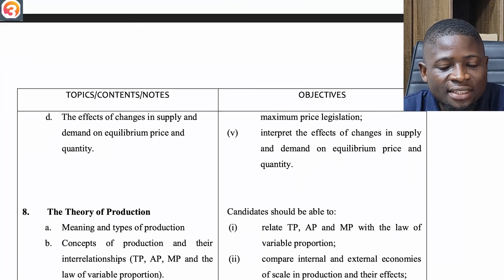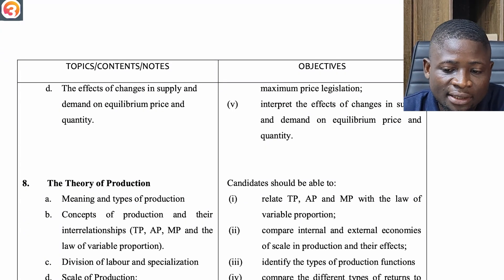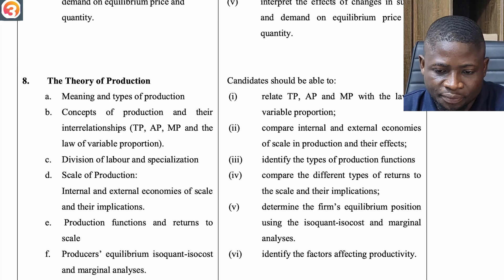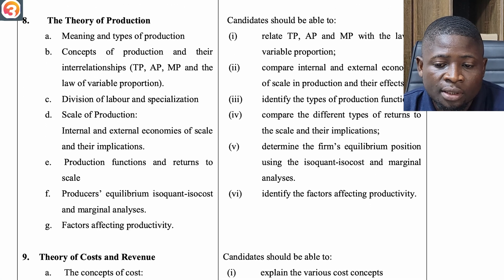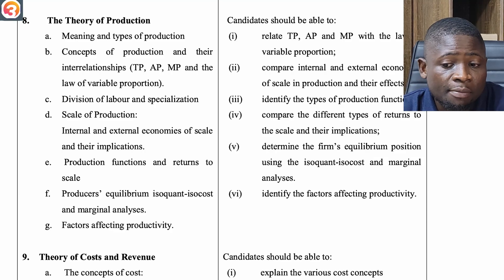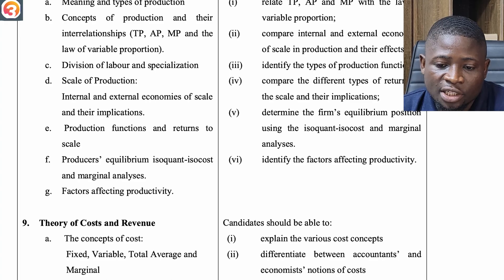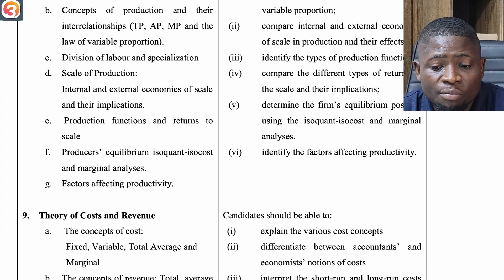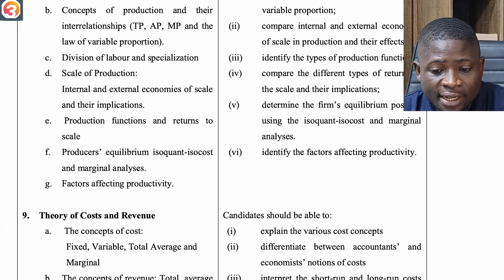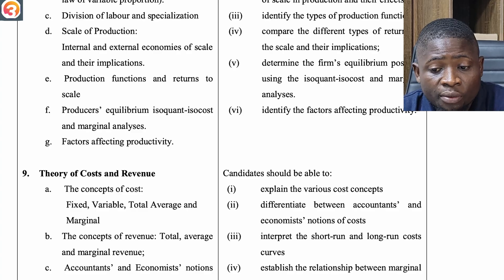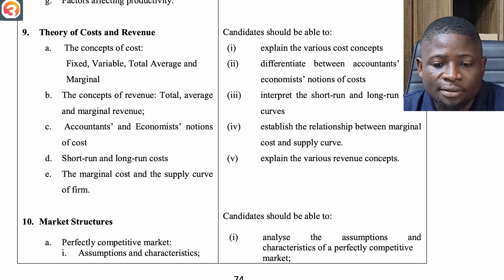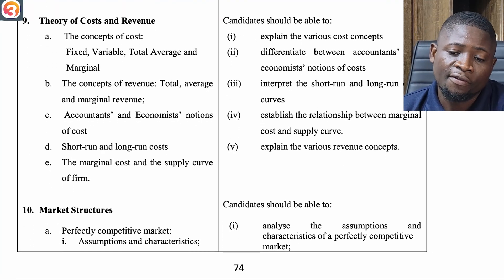Still under Topic 7: price legislation and its effects, and effects of changes in supply and demand on equilibrium price and quantity. The eighth topic is the Theory of Production — meaning and types of production; concepts of TP, AP, MP and the law of variable proportions; division of labor and specialization; scale of production; internal and external economies of scale and their implications; production functions and returns to scale; producer's equilibrium using isoquant and isocost and marginal analysis; and factors affecting productivity.